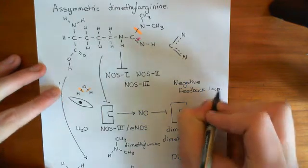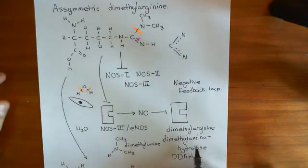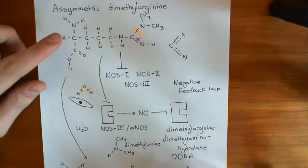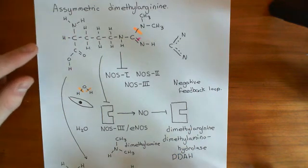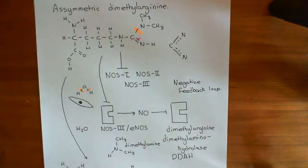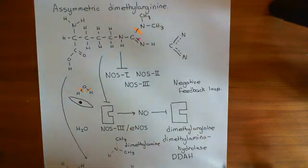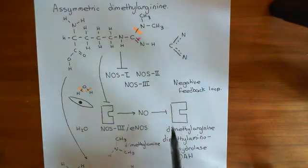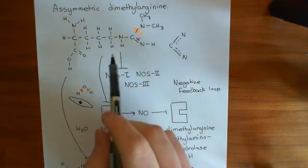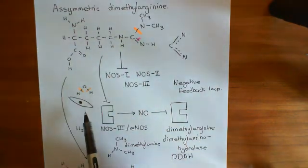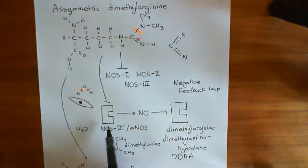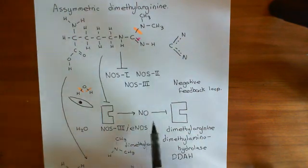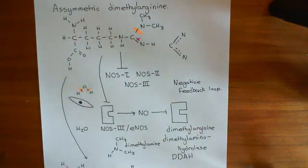The function of dimethylarginine dimethylaminohydrolase and asymmetric dimethyl arginine is an area of much study in cardiovascular disease, because dysfunction of this enzyme could lead to too much ADMA in the cytoplasm of endothelial cells, which inhibits NOS too much, producing too little nitric oxide and permanently over-constricted blood vessels.